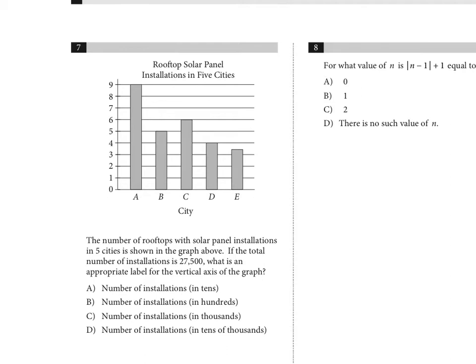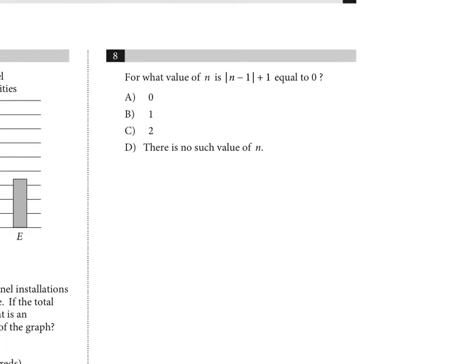Number seven: the total number of solar panel installations across five cities is 27,500. What is the appropriate label for the vertical axis? Looking at the bar heights — roughly 9,000 plus 5,000 and so on — they add up to about 27,000. So the y-axis should be labeled 'number of installations in thousands.'